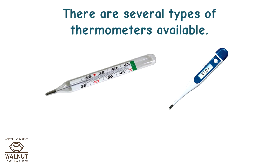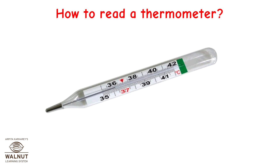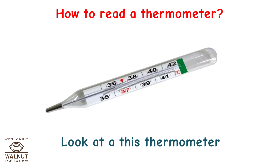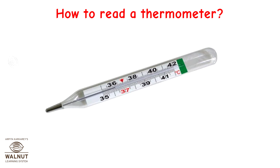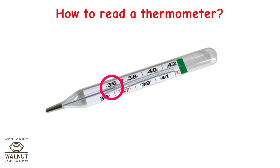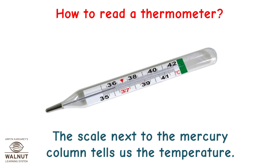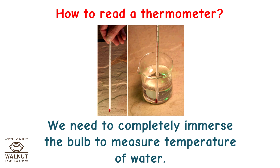There are several types of thermometers available. Digital thermometers are frequently used. How to read a thermometer? Look at this thermometer. The bulb at its lower end is filled with mercury. The mercury rises to a certain level in the tube above the bulb. The scale next to the mercury column tells us the temperature. We need to completely immerse the bulb to measure the temperature of water.